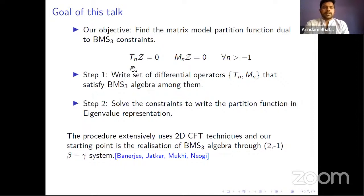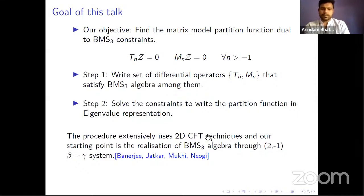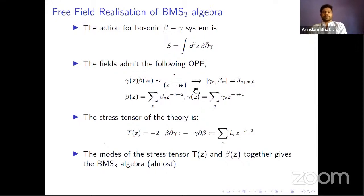Our objective is to find the matrix model partition function which is dual to the BMS3 constraints. The first step is to find the set of differential operators which satisfy the BMS3 algebra among them, and the second step is to solve these constraints and write down a partition function in eigenvalue representation. To do both steps we'll extensively use techniques of 2d CFT, and our starting point is the realization of BMS3 algebra through a (2, -1) beta-gamma system.